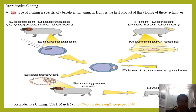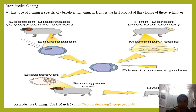Now we will see an example of reproductive cloning. In this case of reproductive cloning, there are two ewes — one is a Finn Dorset and the second is a Scottish Blackface. From the Scottish Blackface, this is a cytoplasmic donor, and from the Finn Dorset, this is a nuclear donor.